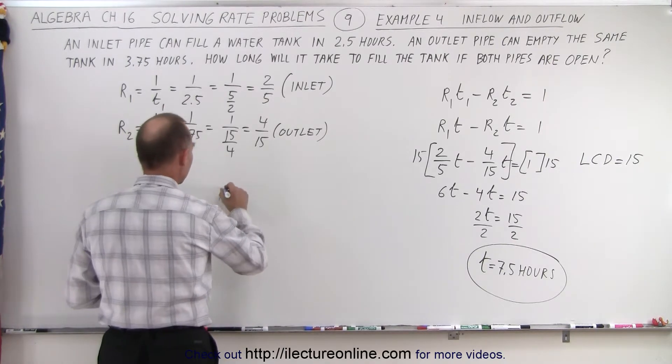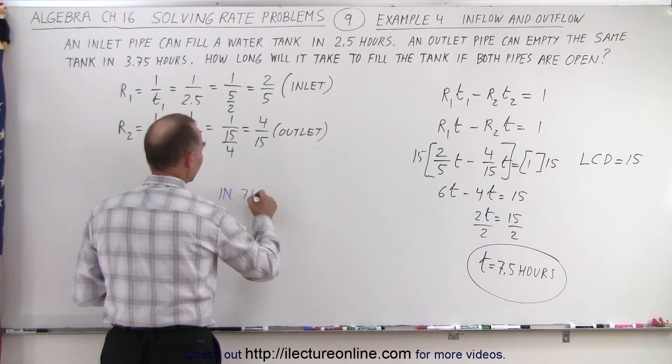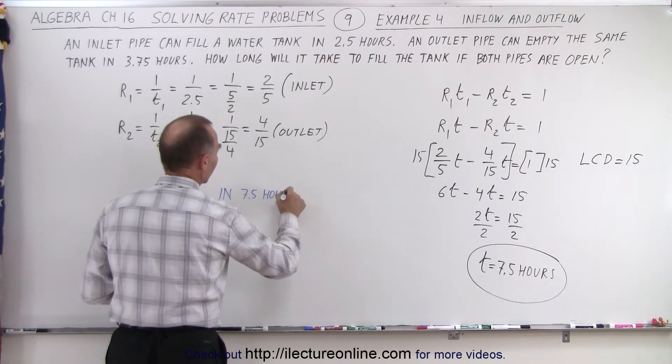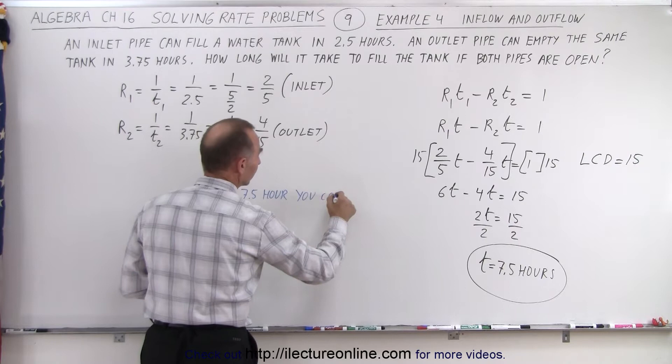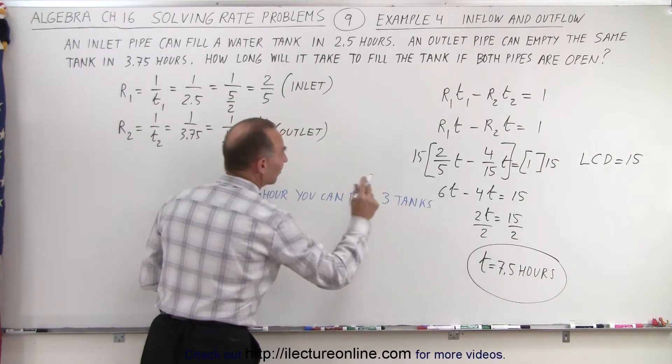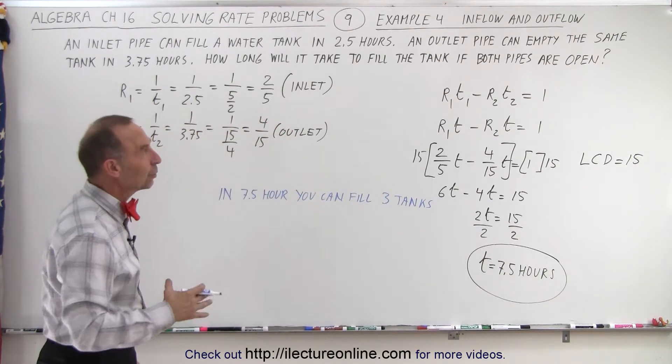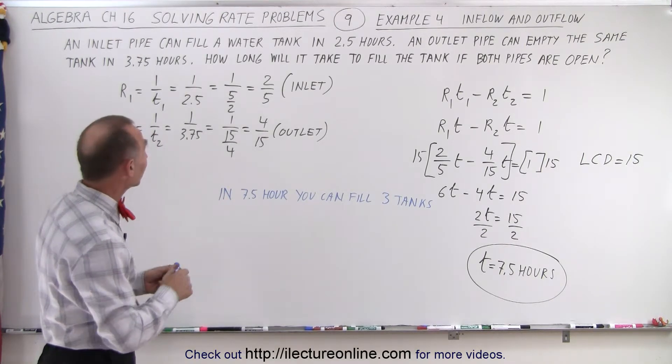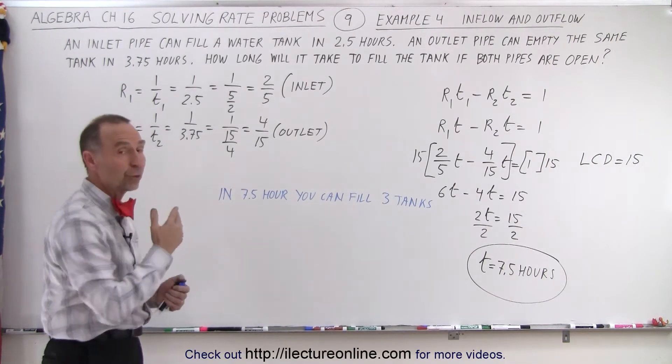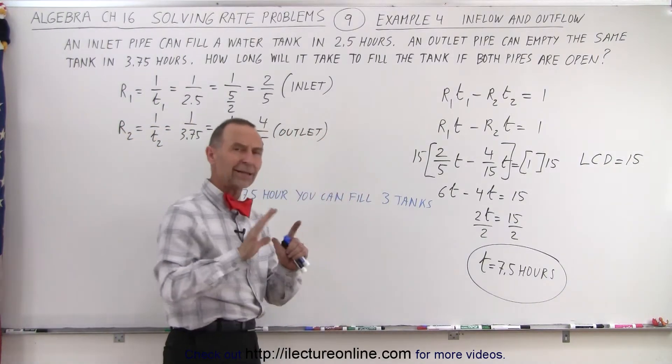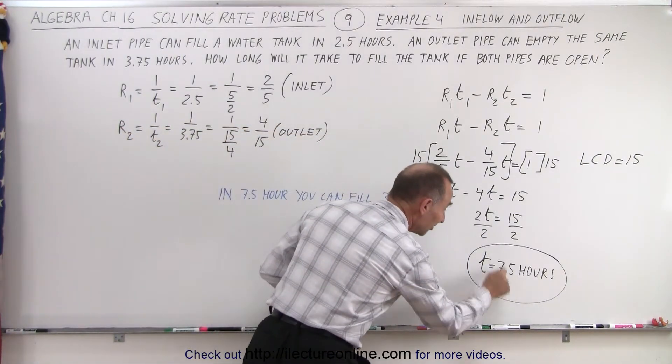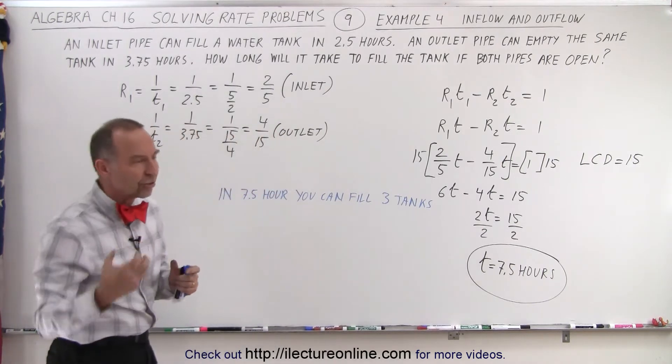So in 7.5 hours, with just the inlet pipe alone, you can fill three tanks. Now let's say that you want to empty the tank with only the outlet pipe. And you can see that the outlet pipe, it takes 3.75 hours to empty the tank. So in 7.5 hours, how many tanks can you empty? Well, you can empty 2 tanks in 7.5 hours.